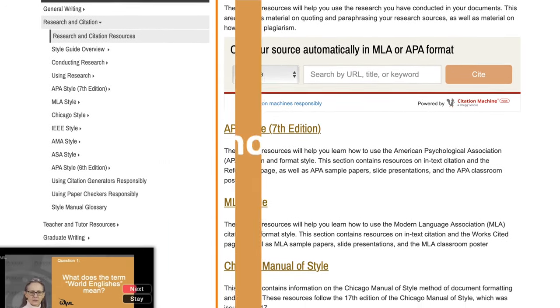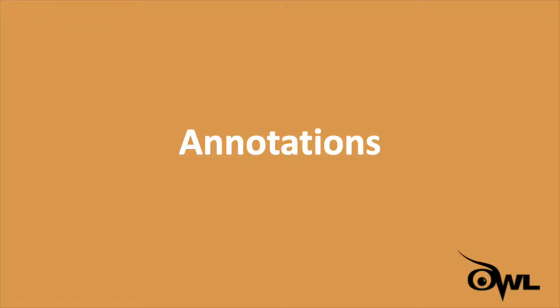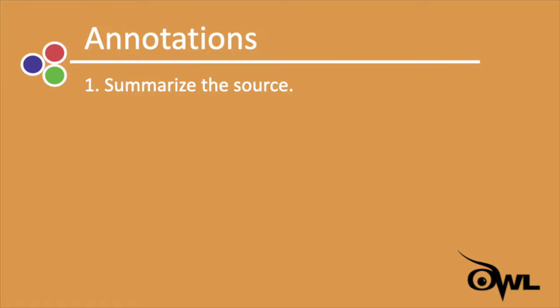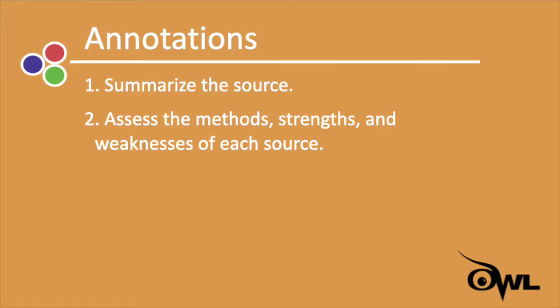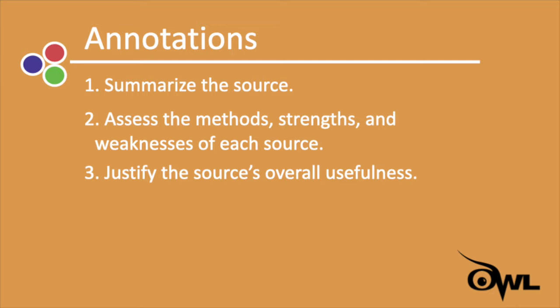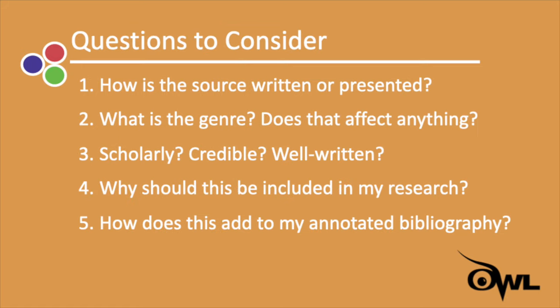Last, but certainly not least, are the annotations themselves. The goal is to accomplish quite a lot in just a little bit of space. At the most basic level, the annotations do three things: they provide a summary of your source, they assess your source's methods, strengths, and weaknesses, and they provide a brief justification as to why your source is useful for your research. Here are just a few questions to consider: How is this source written or presented? What is its genre, and does that affect anything? Is it a scholarly source? Is it credible? Is it well written? Why should this appear in my research, and how does this source add to my annotated bibliography?